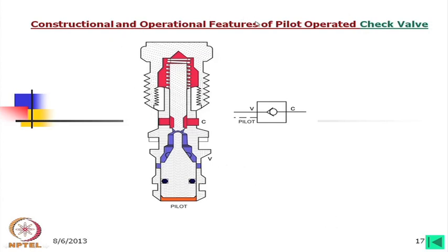This is the construction and operational feature of a pilot operated check valve. As shown in the coloured figure, oil going through this can blow the poppet and go to the tank. But if oil is coming from the other side it cannot go through, and the symbol is as shown. If the flow is from this side it will operate and flow can go from either side; otherwise flow can only go from one direction to the other, and when flow comes from the reverse side it will remain closed.